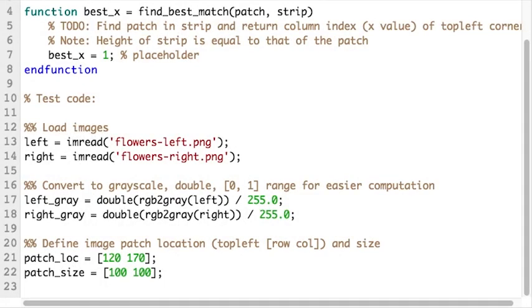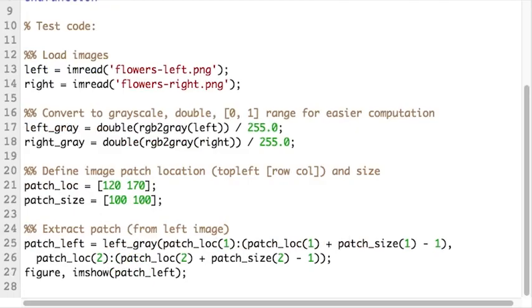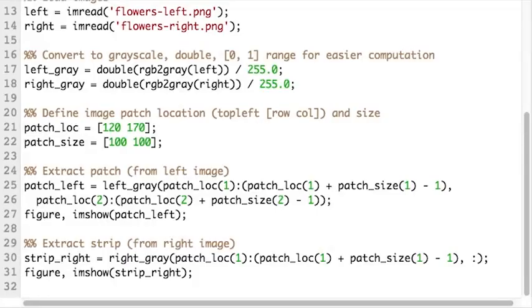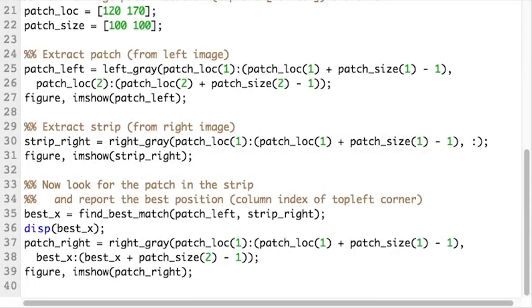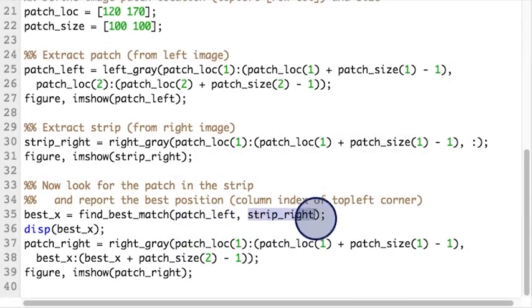Let's define the location and size for the patch we want to match. Let us extract this from the left image. Here's what the patch looks like. Using the patch specifications, let's extract a strip from the right image. Note that here since we want to go across the width of the image, we select all the columns. And here's the strip from the right image. Once you have implemented your function, call it by passing in patch_left and strip_right. You should be able to use the best x coordinate found to extract a patch from the right image. Go ahead and give it a shot.